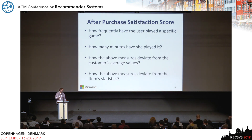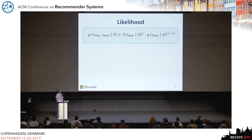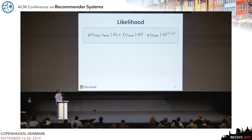Another thing to consider is that some items are specifically designed to be played for a longer period of time, so you have to take that into account. What we want is a likelihood that captures both a binary signal about the probability of purchasing something and a satisfaction score for each user-item pair. This is proportional to a factorized term that models the purchase probability and the satisfaction score.